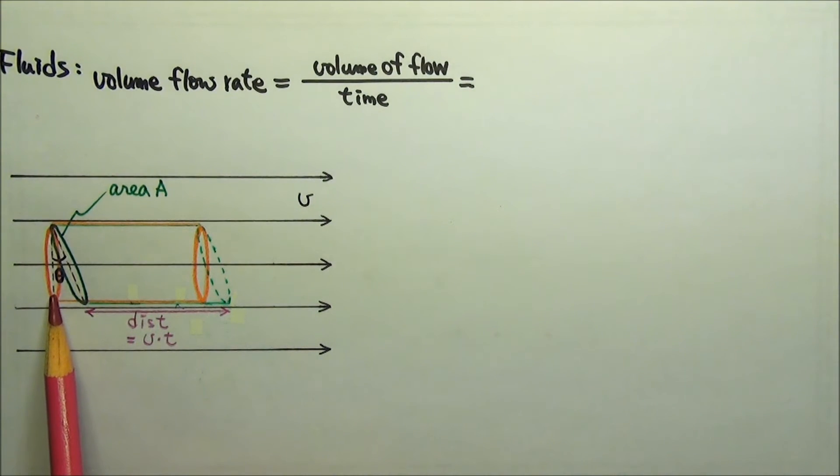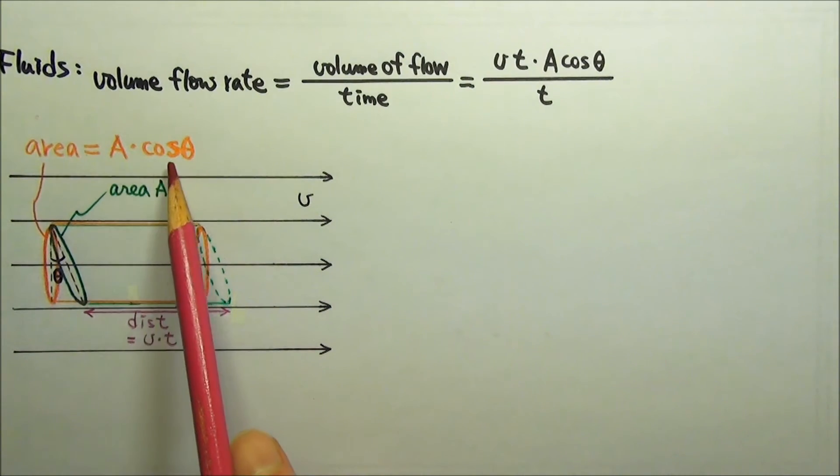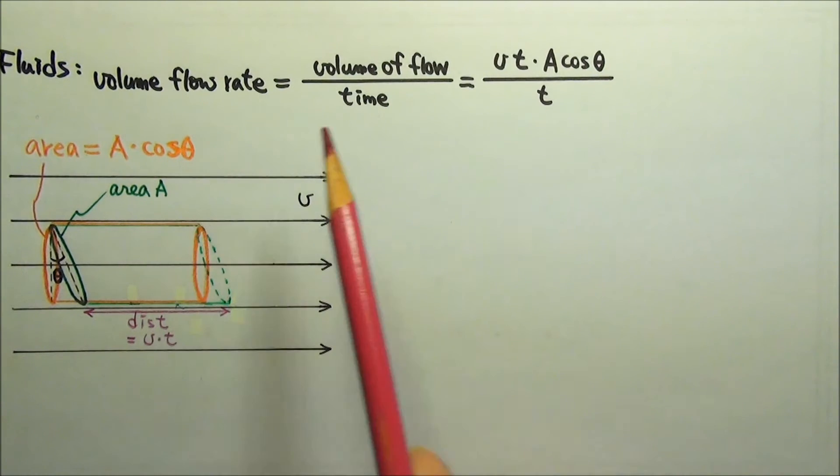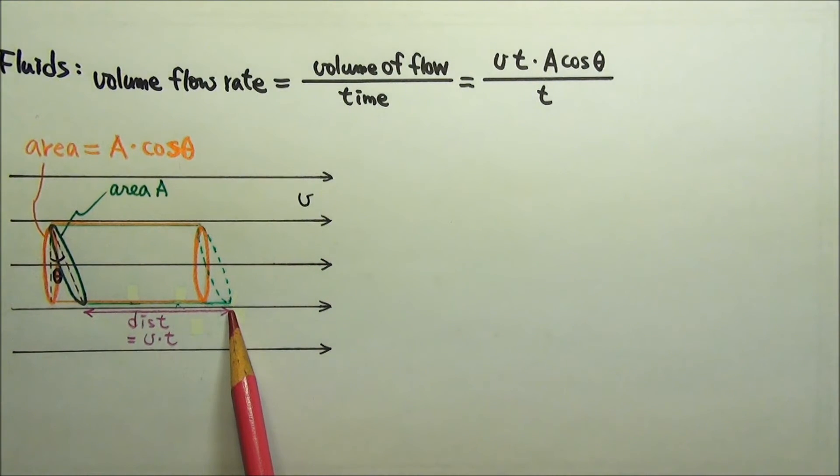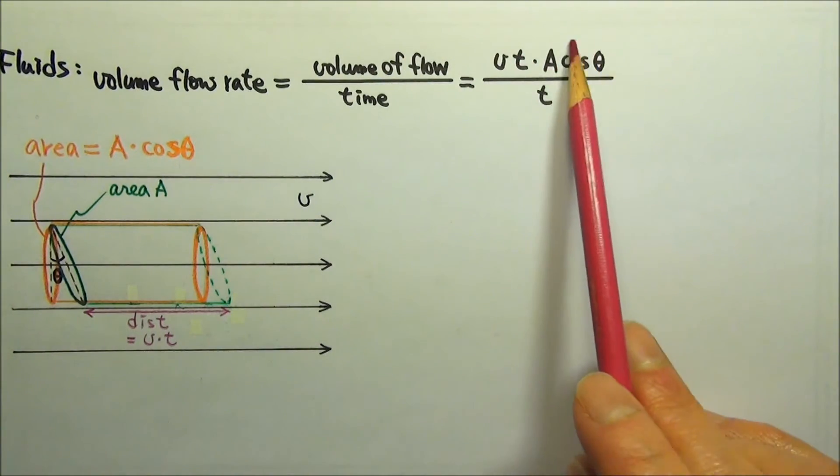The base of this orange cylinder has a smaller area than A. Since this base is adjacent to the angle theta, the base area is A times cosine theta. Therefore, the volume of flow, the volume of this orange cylinder, is the height of the cylinder, which is the same as this V times t, times the base, A cosine theta.